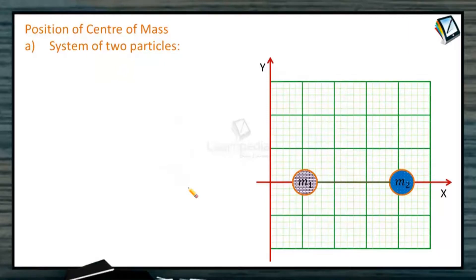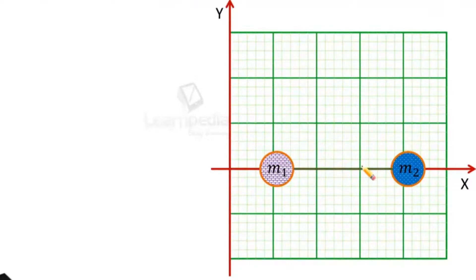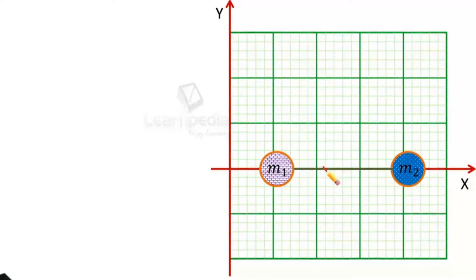First, we will try to calculate where the center of mass is located for different systems. I will take the position of center of mass of a two-particle system. Let us say a body is made up of two particles M1 and M2 at a distance R. The center of mass lies along this line connecting the two particles. Let M1 be heavier than M2, so we can position the center of mass at this point. With respect to this point, M1 is at a distance R1 and M2 at a distance R2.